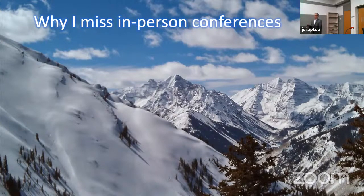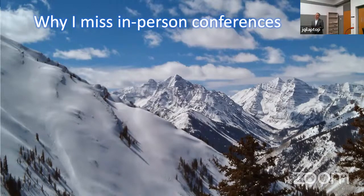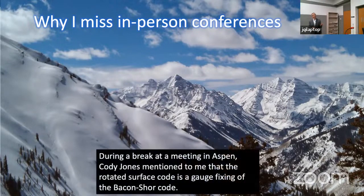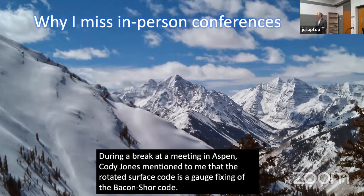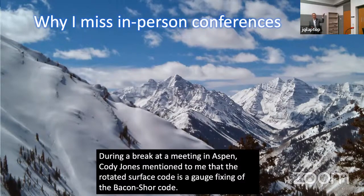I really miss in-person events — going to labs, learning what doesn't work, what not to buy. In virtual meetings that's totally lost; the hybrid March Meeting was awful. I always get the most out of hikes or coffee conversations. At an Aspen conference, Cody Jones told me on a ski chairlift that the rotated surface code is just a gauge fixing of the Bacon-Shor code. When he said that I immediately knew it was true, but I had just never put those words together.